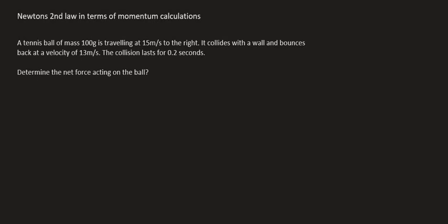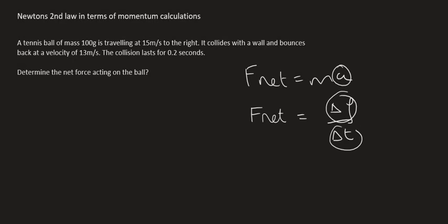Just remember that in grade 11 we typically used to use F net equals MA. Then in the previous lesson I showed you how we can take that equation, do a few manipulations with acceleration and eventually we end up with that formula over there where F net is equal to the change in the momentum divided by the change in time.